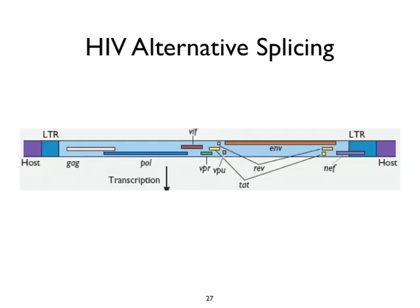HIV generates its very important regulatory proteins all as a result of splicing. Its splicing is controlled in part by some of its own proteins — they control elongation of transcription from viral DNA integrated into the genome, and they also control where and when splicing occurs. Remember that with a retrovirus, you have to make a full-length RNA transcript to generate a genome, and also partial-length transcripts to make the various proteins.